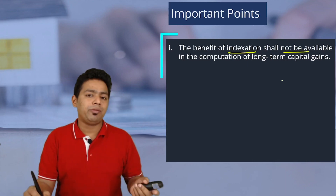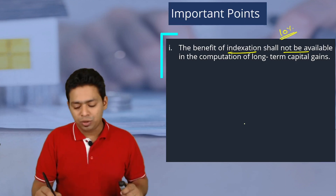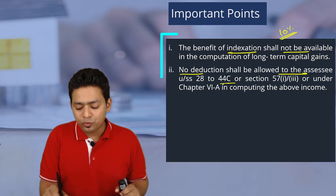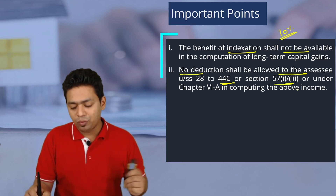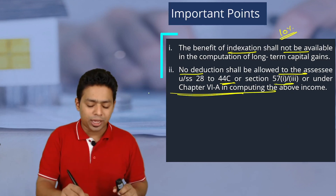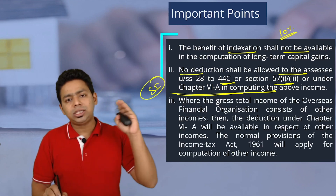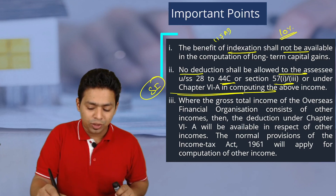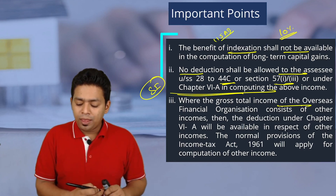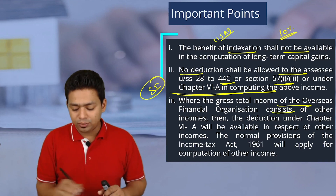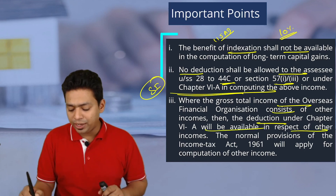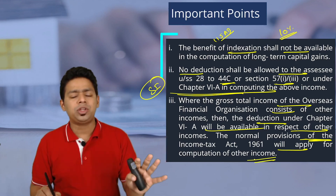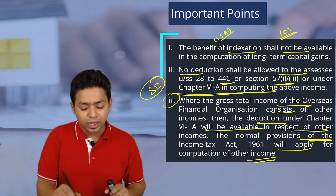The benefit of indexation shall not be available for the special income. Since we are giving a 10 percent tax rate, no deduction shall be allowed under Sections 28 to 44C or Section 57(1). Chapter 6A deductions are also not available against special income. However, Chapter 6A deductions will be available against normal income — other income not covered under Section 115AB — where normal provisions, normal tax rates, and normal deductions will all apply.